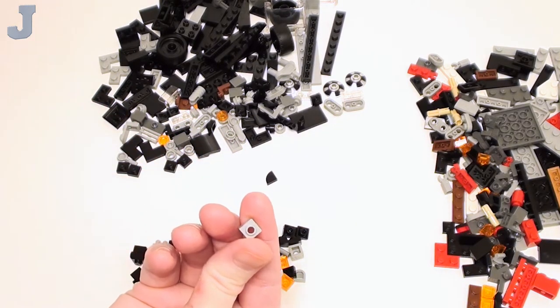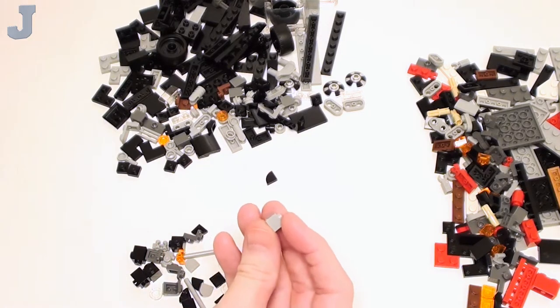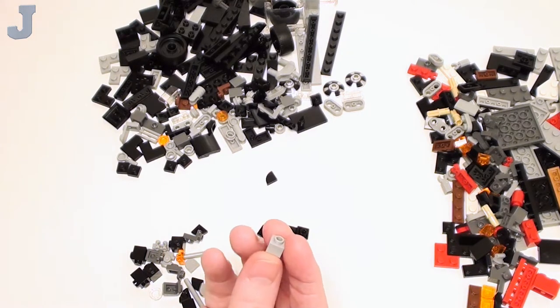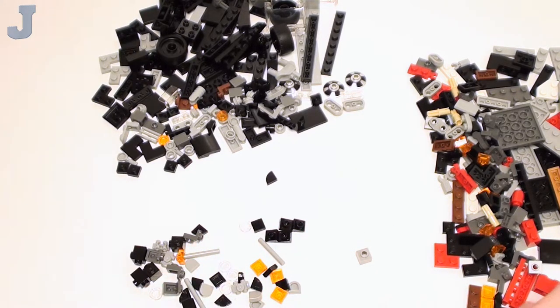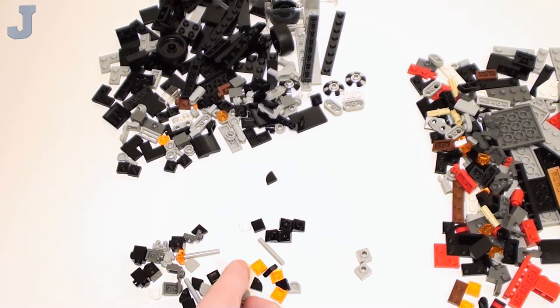So quarter round 1 by 1 flat tiles. Okay I was wondering what this is. This is a 2 thirds brick or just a 2 thirds plate. It's like a 1 by 1 brick. Looks like we get a few of those.